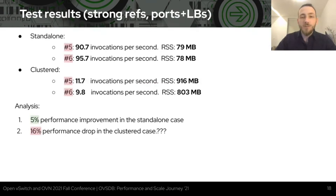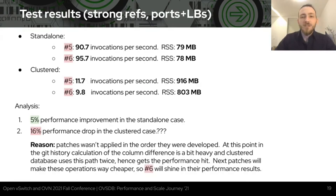Looking at the performance improvement for change number 6: we see a 5% improvement in standalone case but a 16% performance drop in the clustered case. The reason is that patches weren't applied in the order they were developed. At this point in git history, calculation of column differences is a bit heavy. Once the next patch is applied, operations will be cheaper, and the performance improvement expected from this patch will be embedded in the results for subsequent changes.